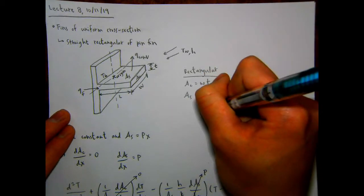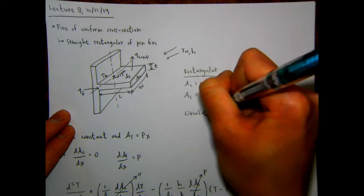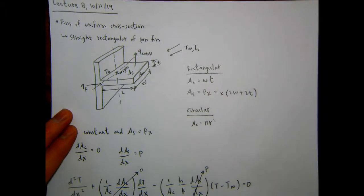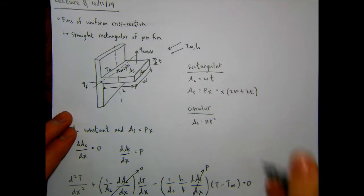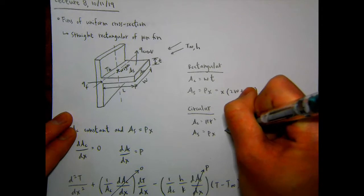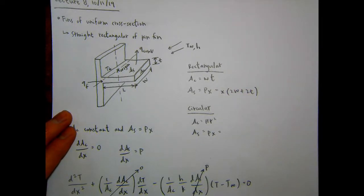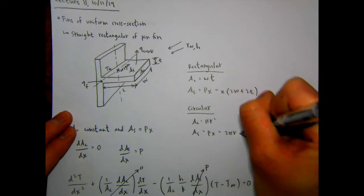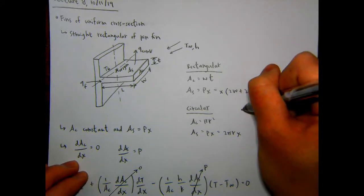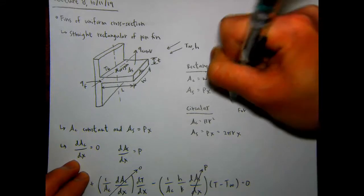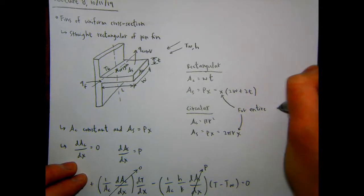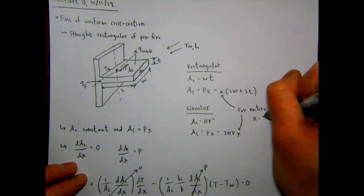For a circular cross-section (pin fin), the cross-sectional area is πR², and the surface area is the perimeter times x, where the perimeter is the circumference 2πR. So the surface area is 2πR times x. For the entire fin, x equals L.